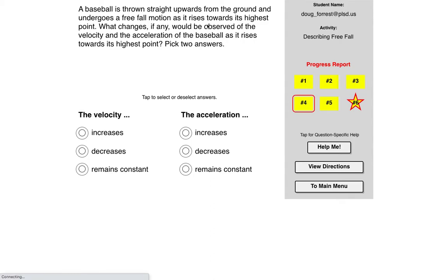What changes, if any, would be observed? Well, the speed would decrease on its way up. Now you've got to be careful because it says it rises towards its highest point. Sometimes it's going to say when it comes down. The acceleration is always constant once it's left the person's hand.